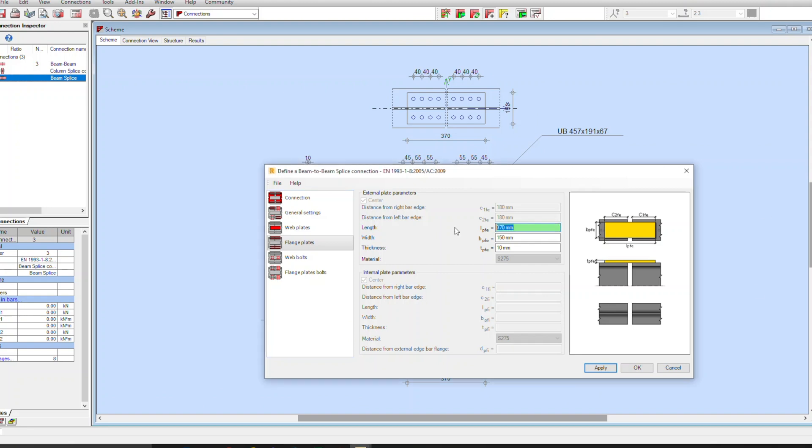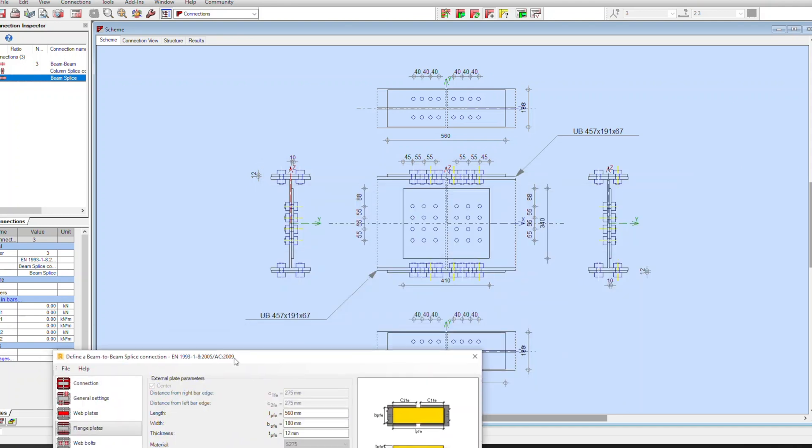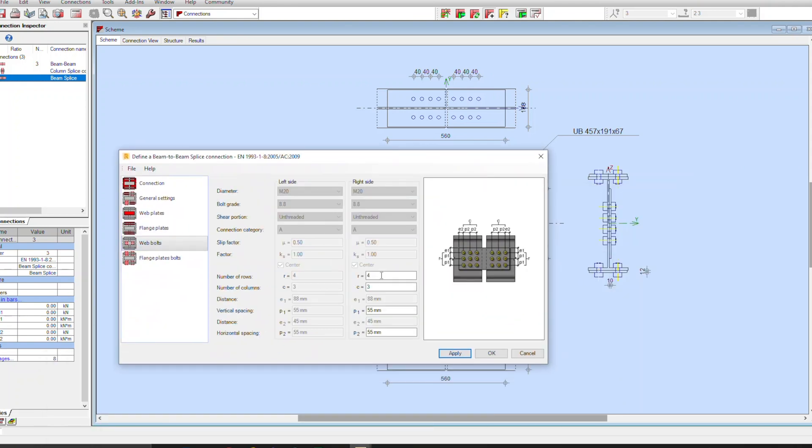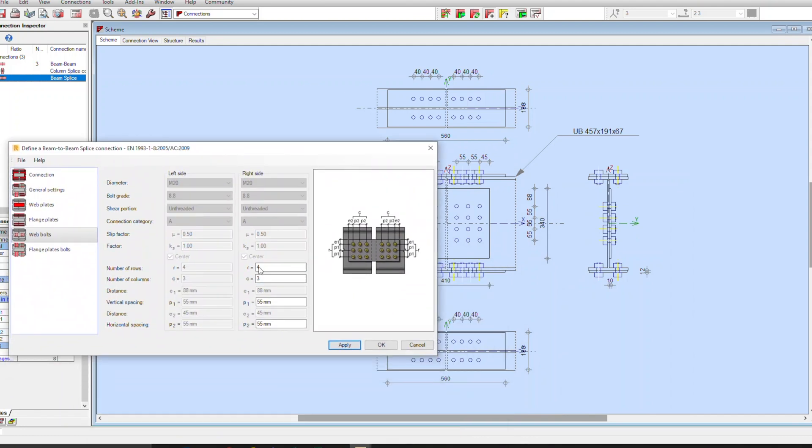So where's the best place to actually position a splice connection? Well that actually depends on how the beam is loaded. You really need to look at the force diagram to see where the best position could be. Say for example in a simply supported beam, the middle of the beam is actually the worst position to have a splice because that's where the highest moment and shear force is. An ideal position may be at the third point where the moment is less.